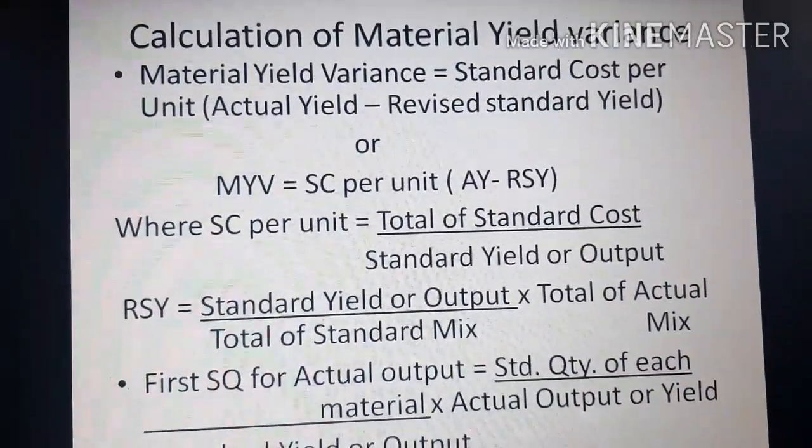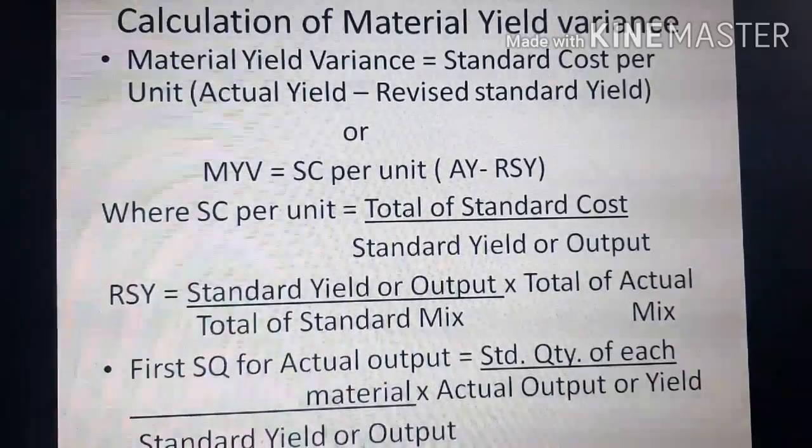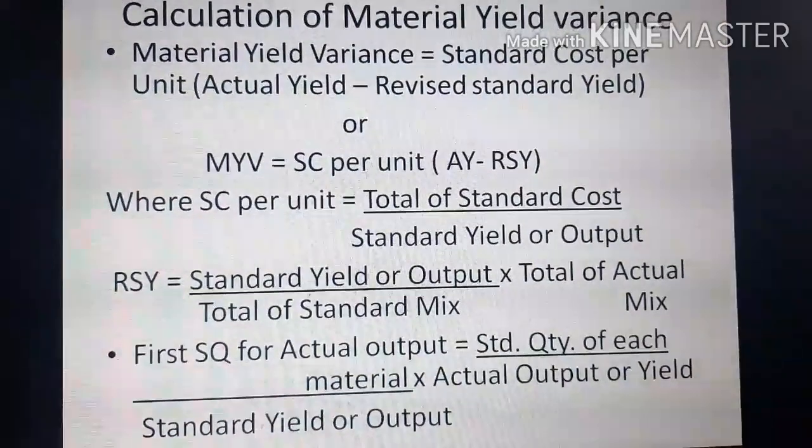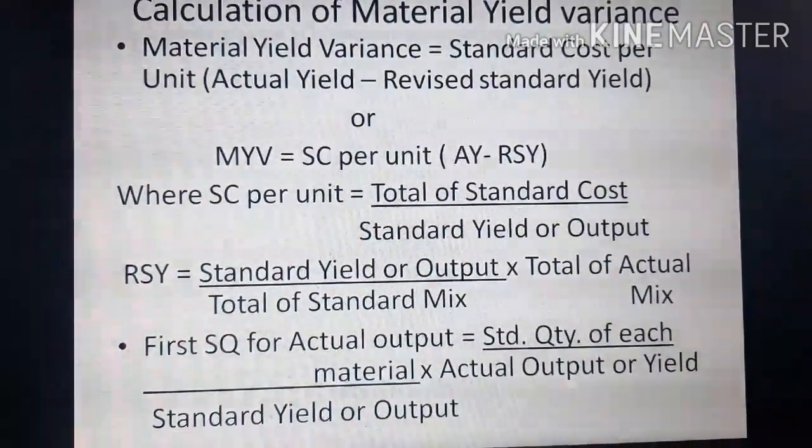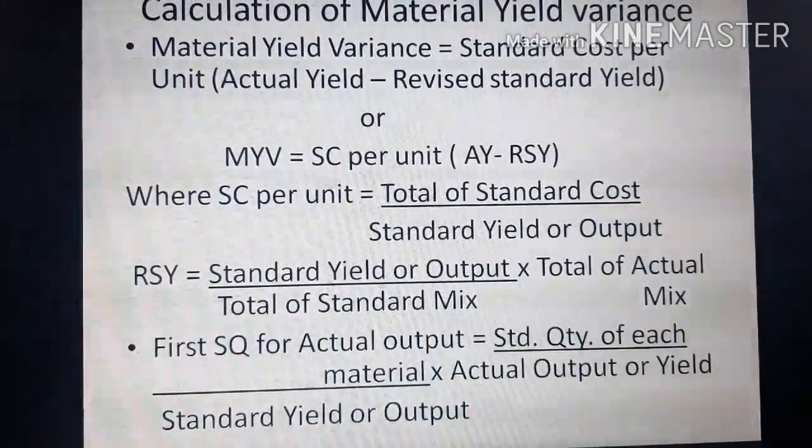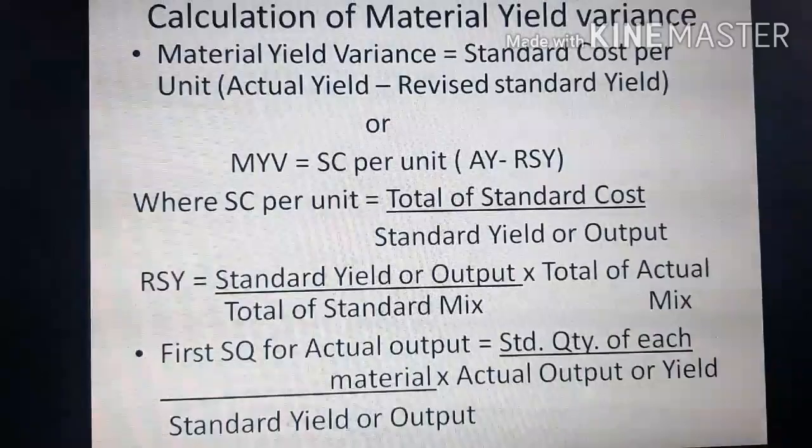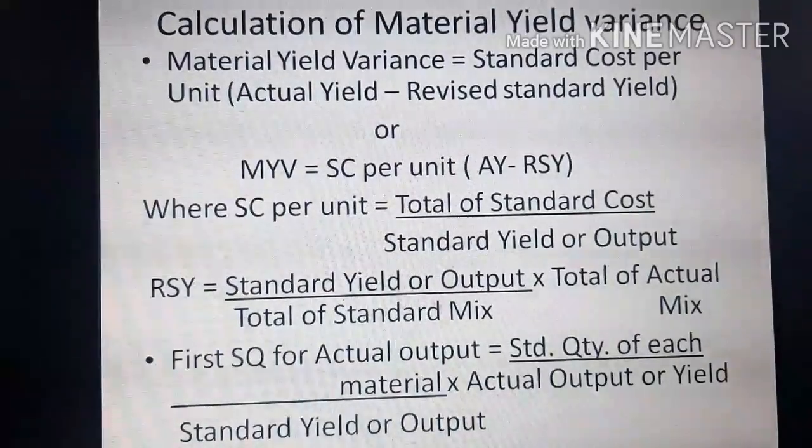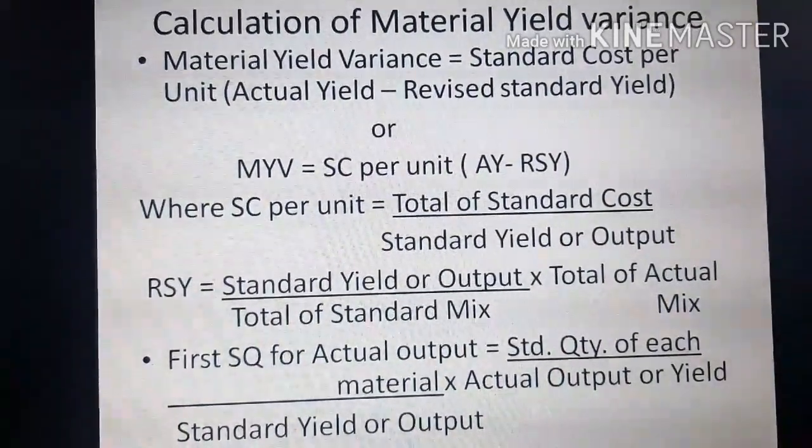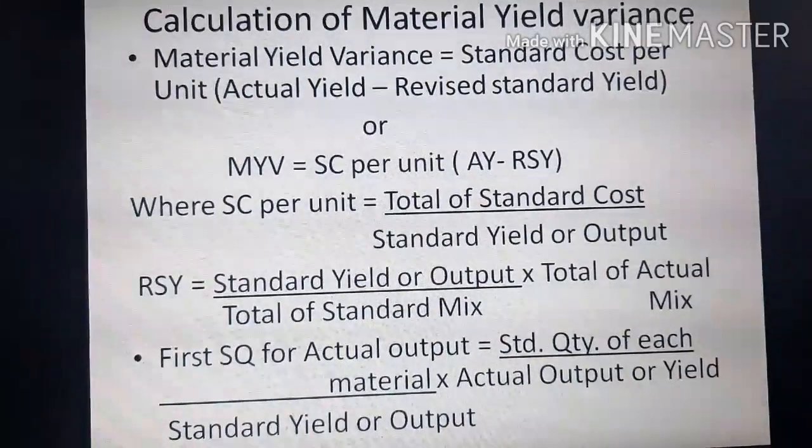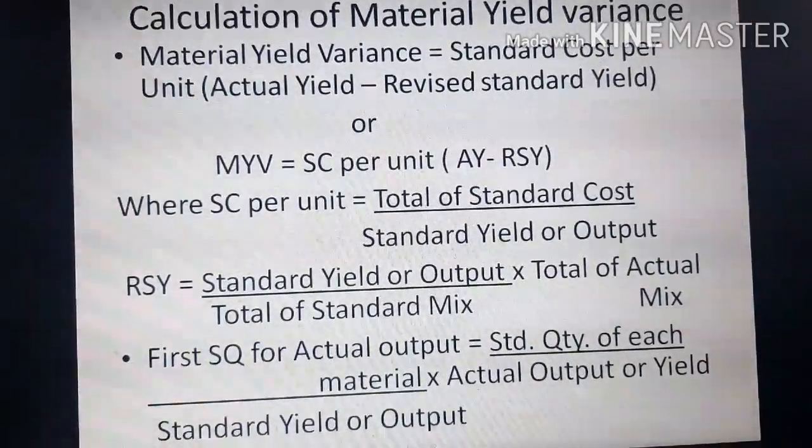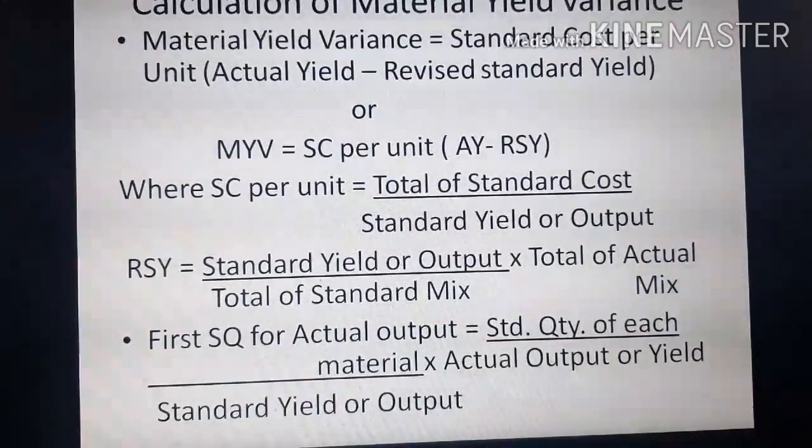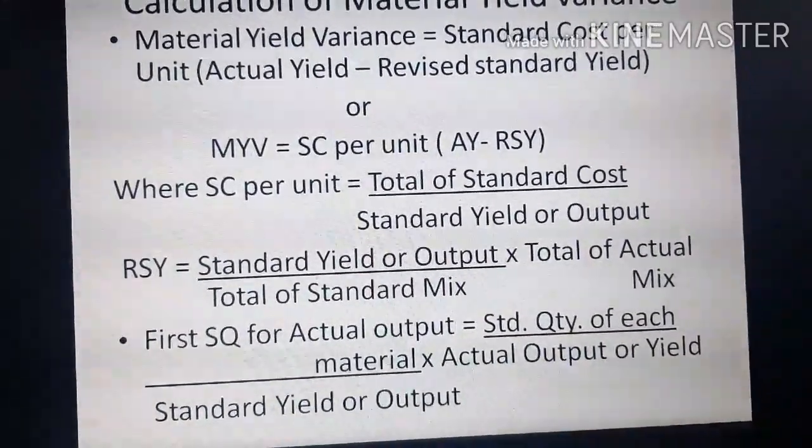Calculation of Material Yield Variance: Material Yield Variance = Standard Cost per Unit × (Actual Yield - Revised Standard Yield). Or MYV = SC per unit × (AY - RSY), where SC per unit = Total of Standard Cost / Standard Yield or Output. RSY = Standard Yield or Output × Total of Actual Mix / Total of Standard Mix.